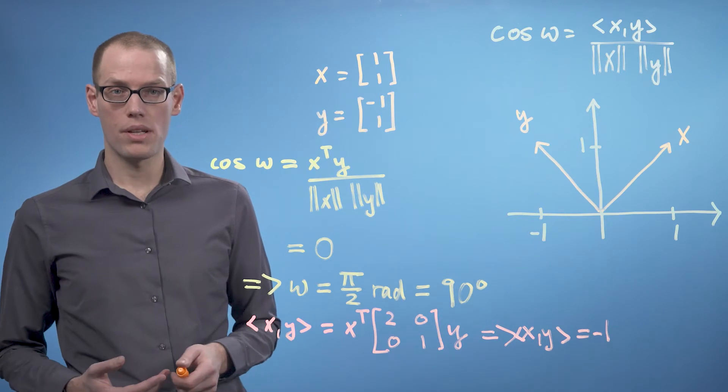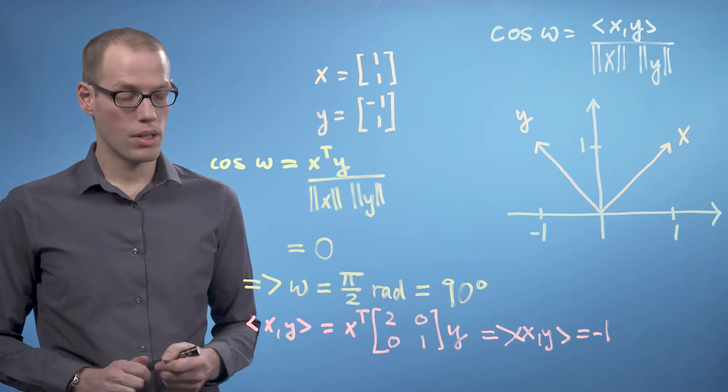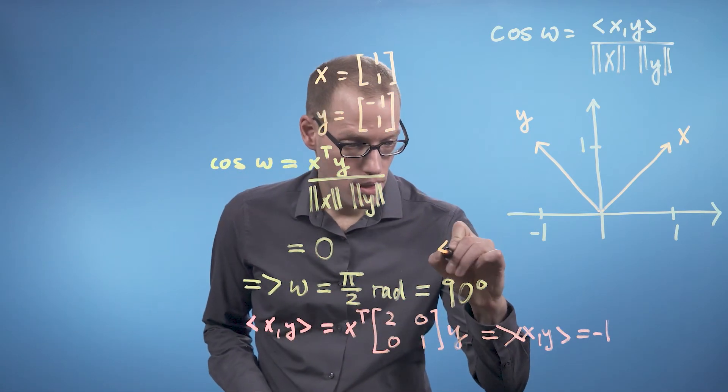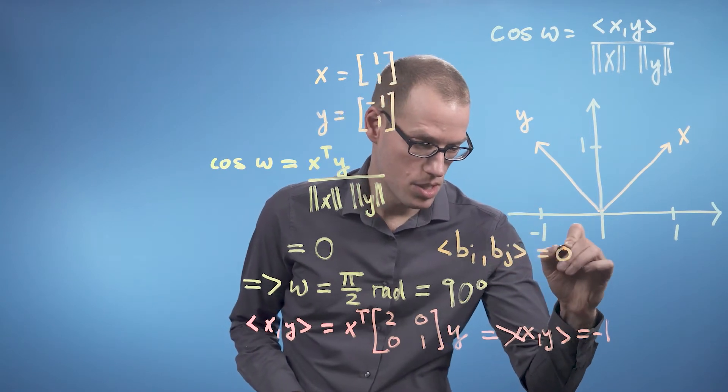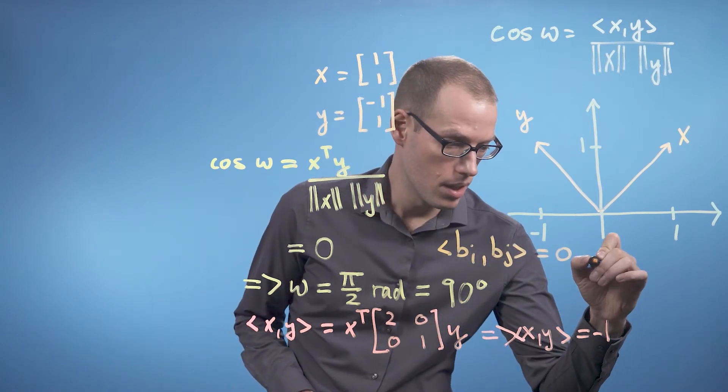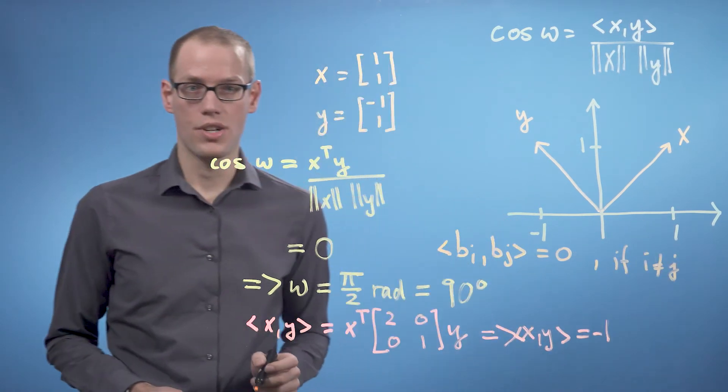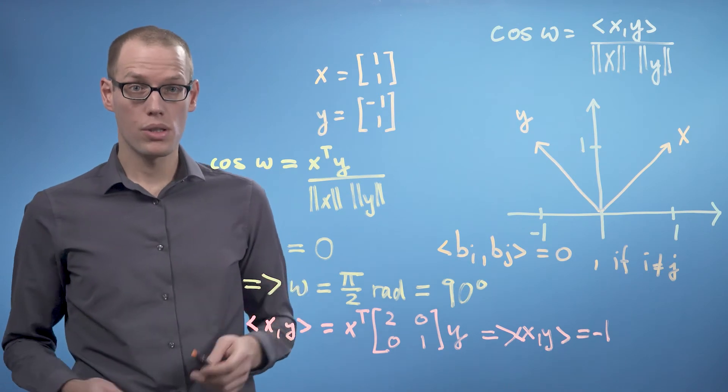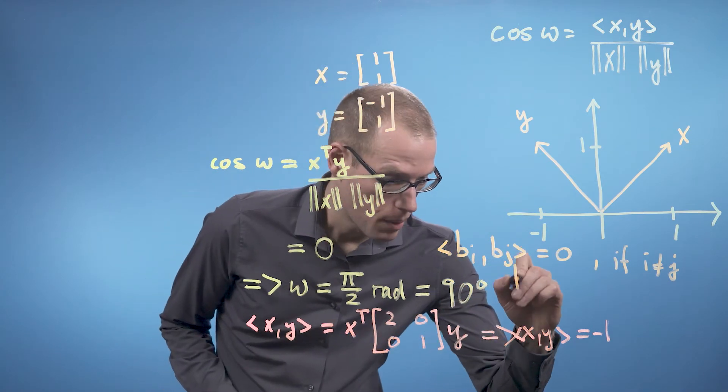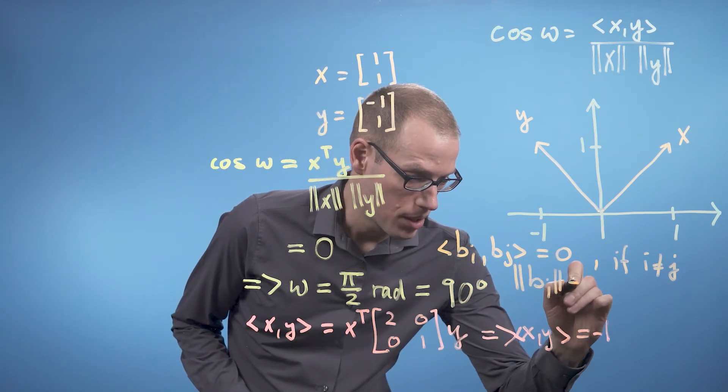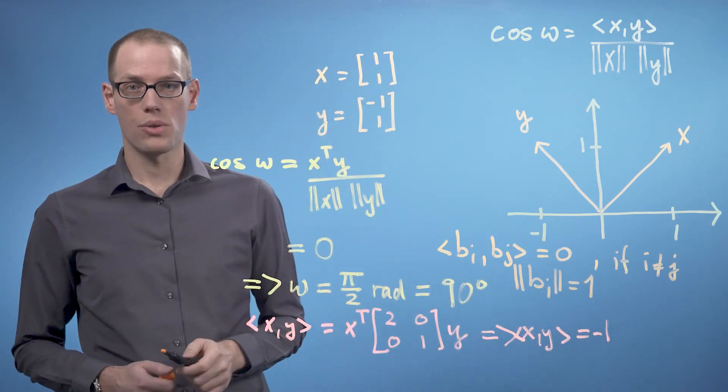We can also find a basis of a vector space such that the basis vectors are all orthogonal to each other. That means we get the inner product between bi and bj is 0 if i is not the same index as j. And we can also use the inner product to normalize these basis vectors. That means we can make sure that every bi has length 1. Then we call this an orthonormal basis.